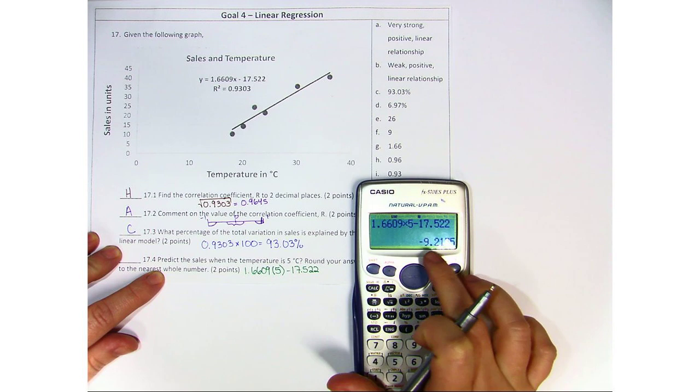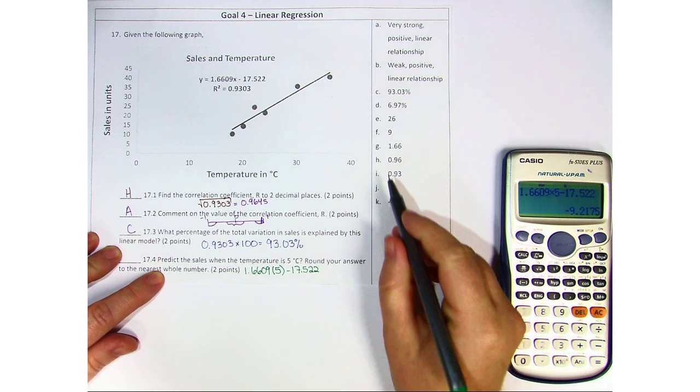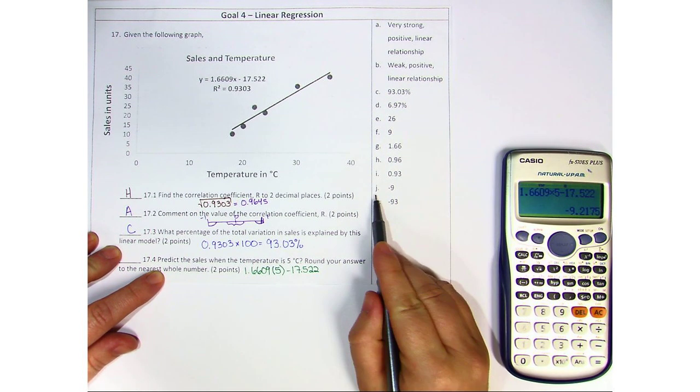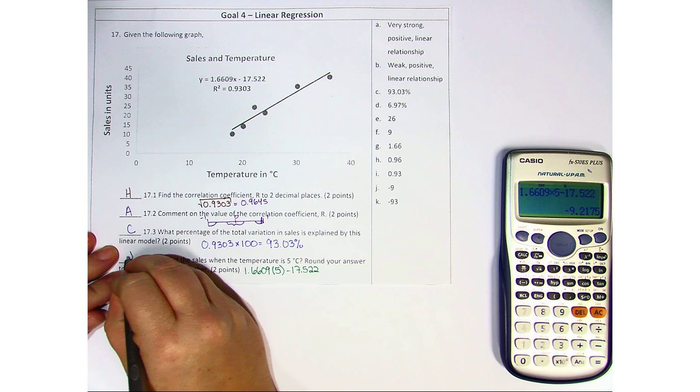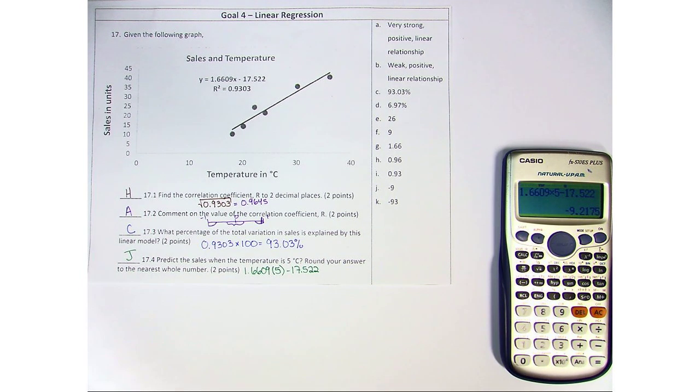And we get the answer negative 9.2. So here, the closest answer that we see is J at negative 9.